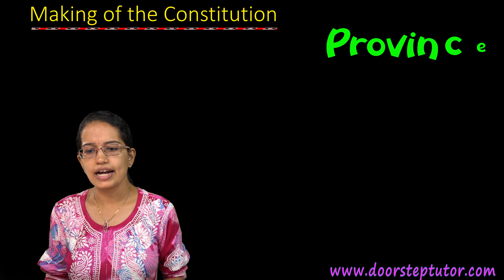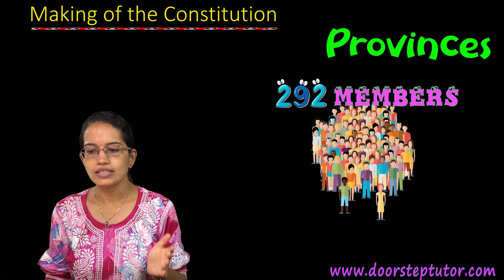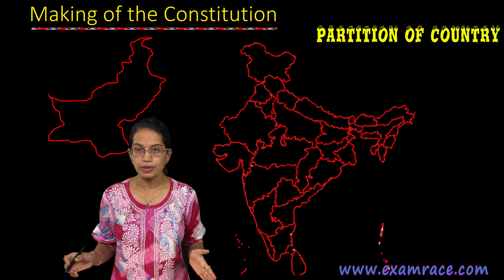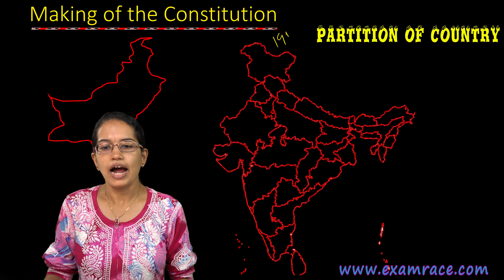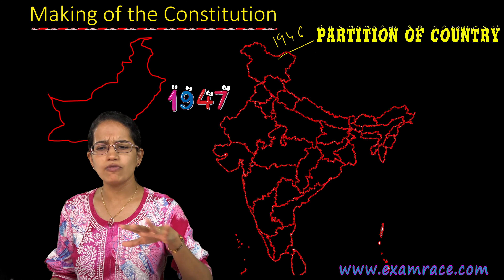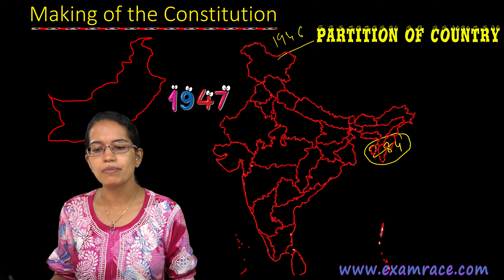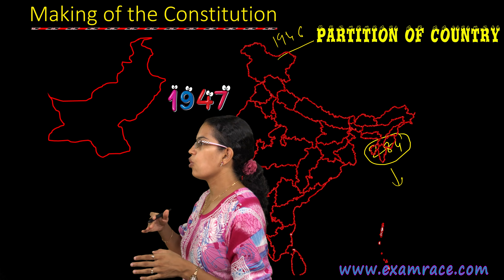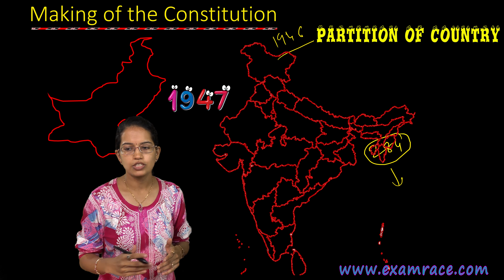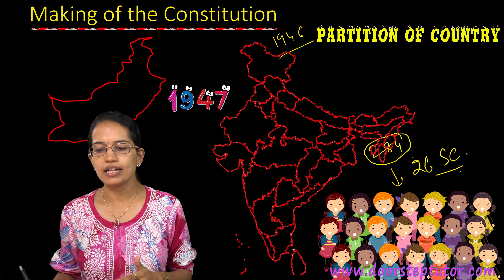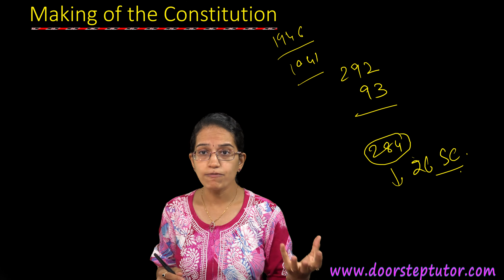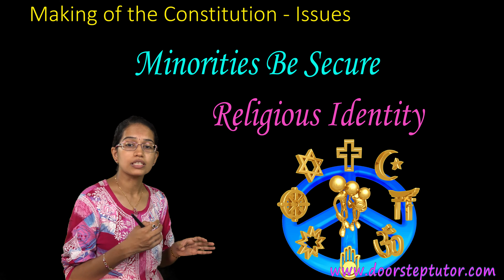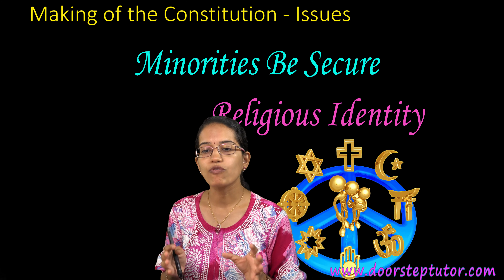Initially, the provinces elected 292 members and the princely states had 93 members. However, during this time partition took place. It started in 1946, and after partition in 1947 — a violent period — only 284 members remained in present-day India, with the remaining going to the region of Pakistan. Of these members, 26 were from the scheduled caste. Issues of minorities came in — bringing security to the minority and ensuring that religious identity should not have bearing on citizenship were some of the major drivers of the constitution at that time.